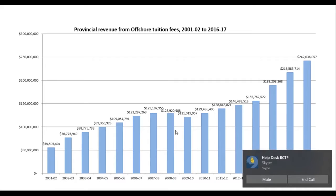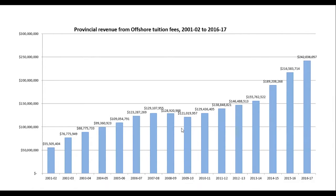So what do we see has happened? There was a tremendous increase in offshore tuition for international students — it was at $55 million at the beginning of this century and last year was at $242 million. I noted one area of reduction in 2008-2009 and 2009-2010, which of course coincides with the global recession that started at that time.